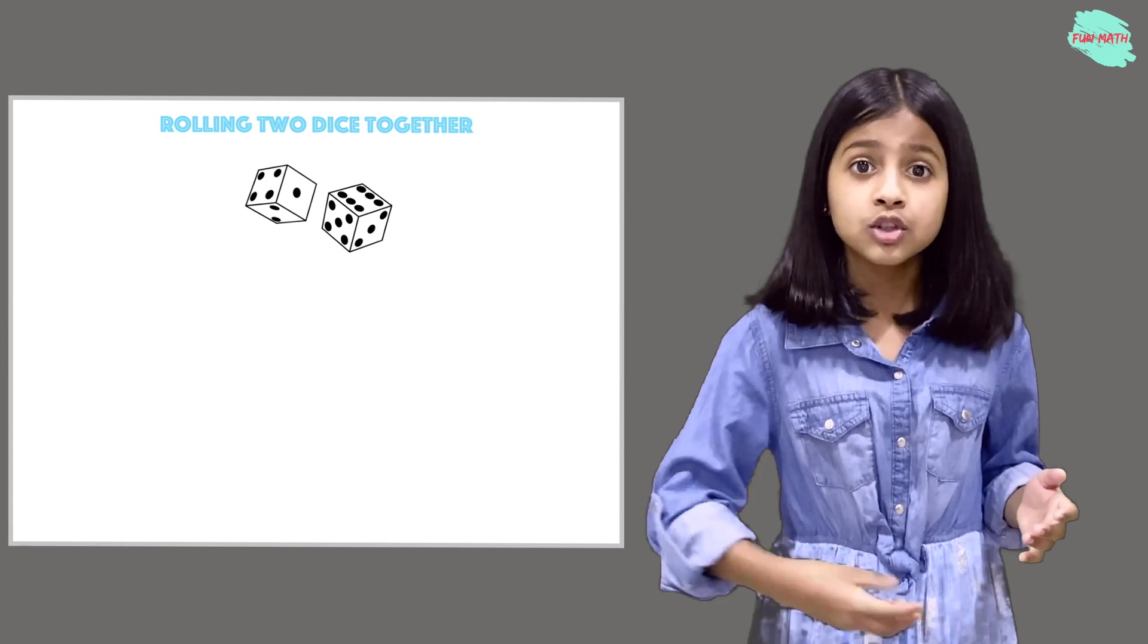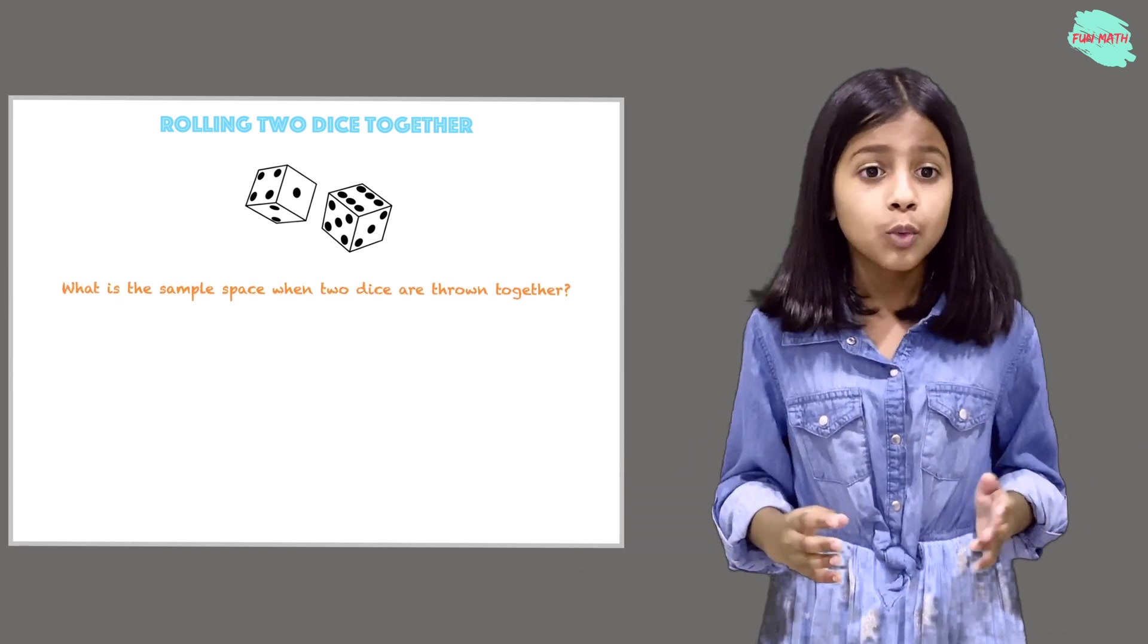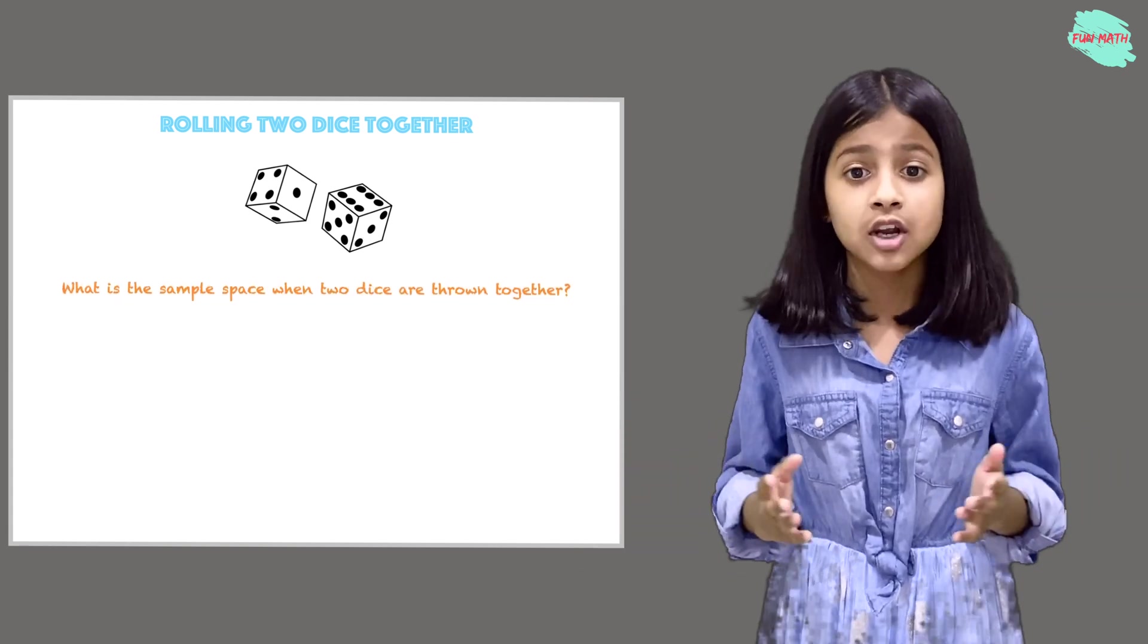Here we are rolling two dice together. What is the sample space when two dice are thrown together?